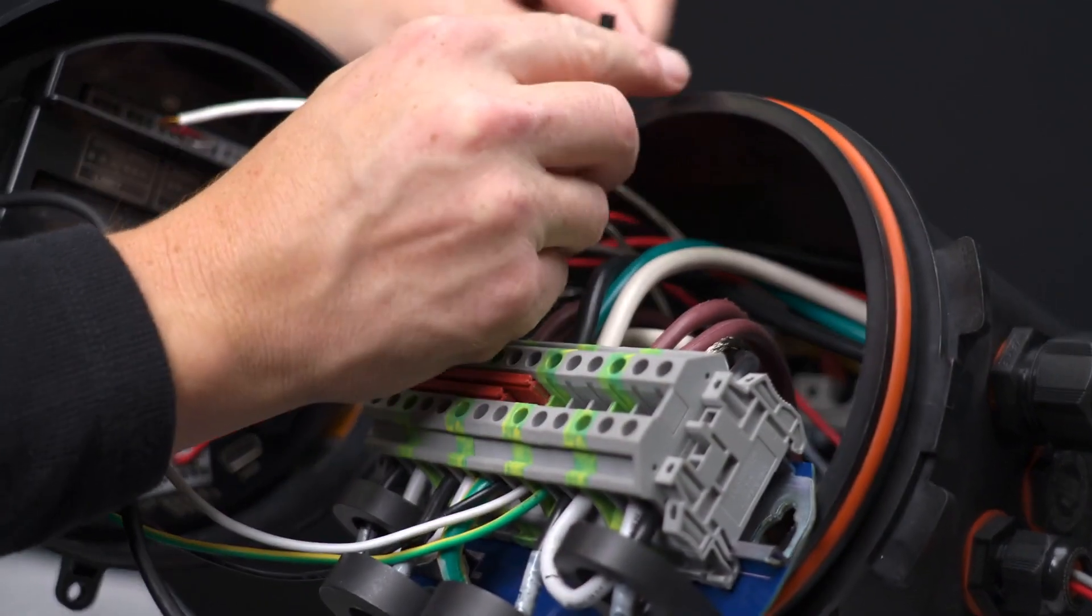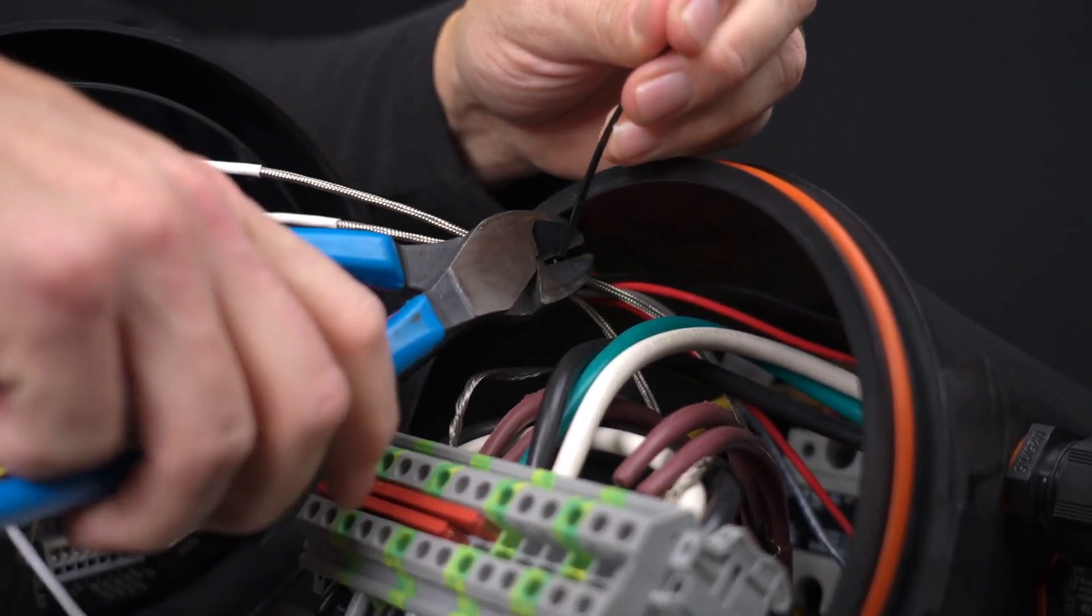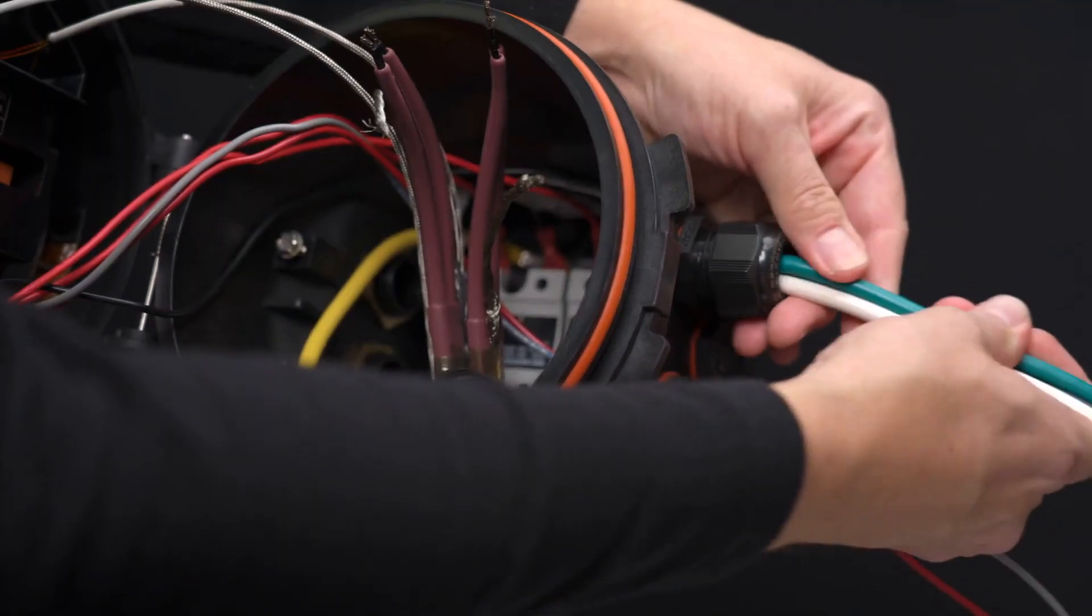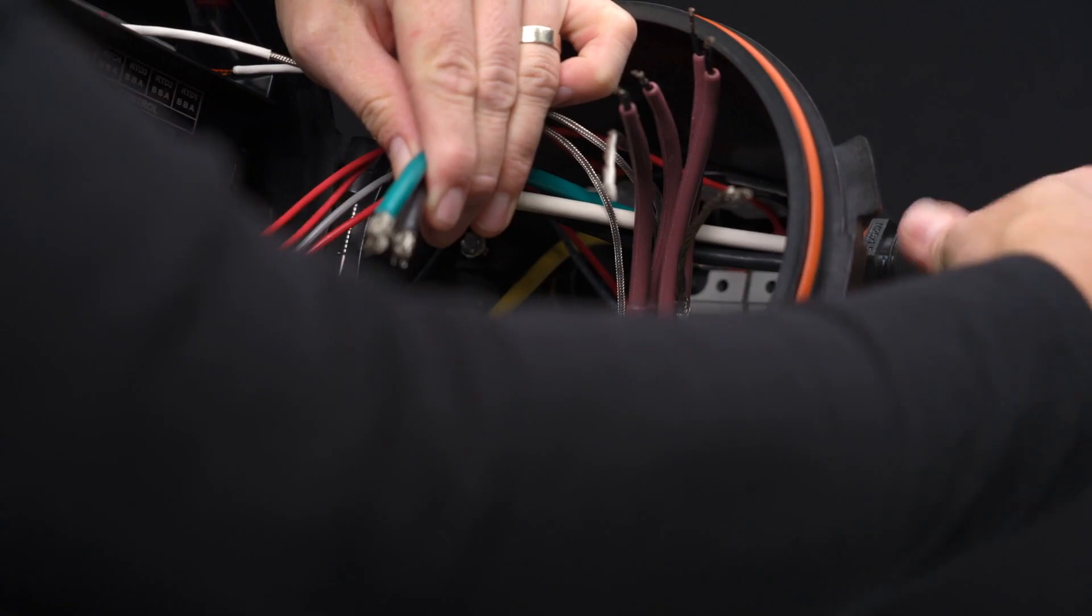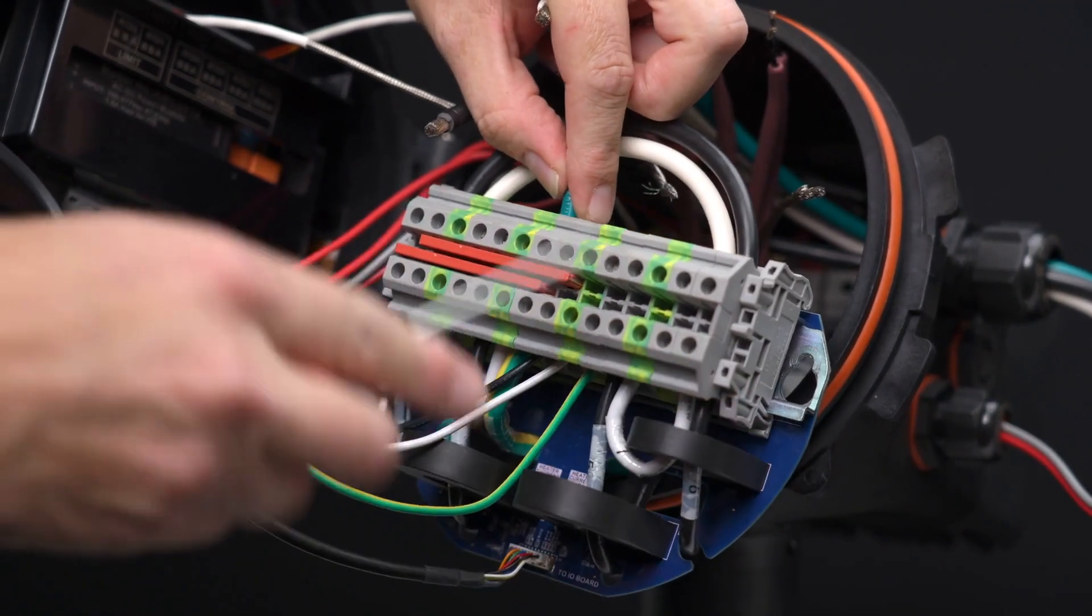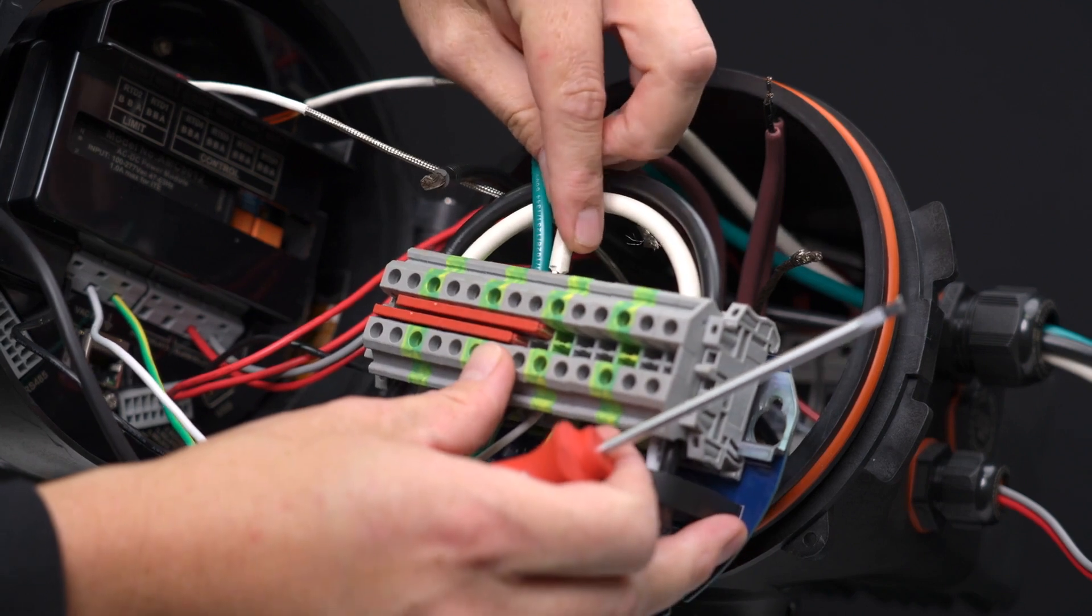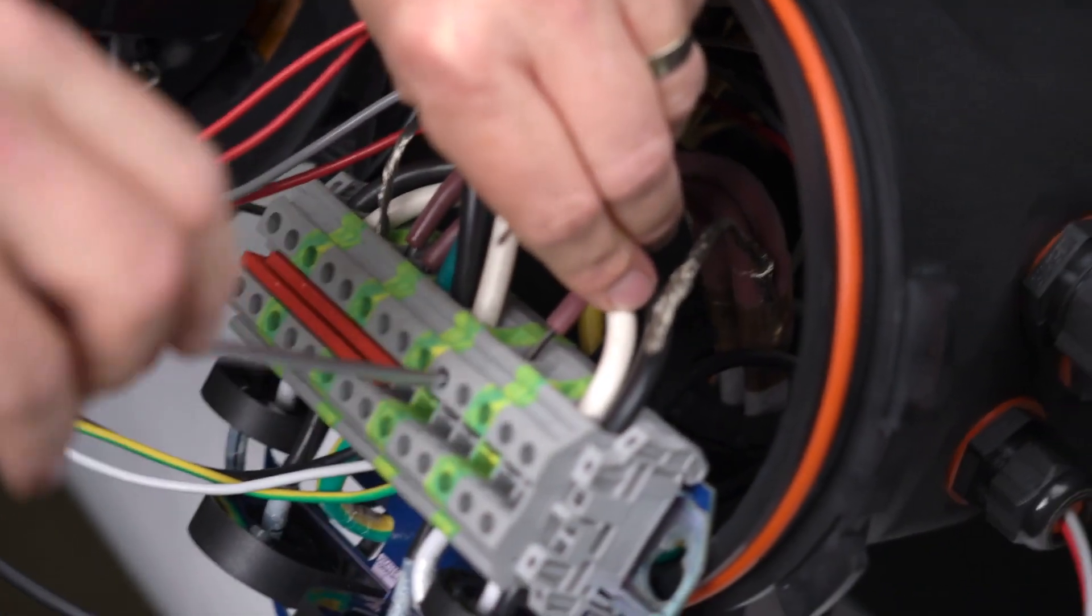Using tie wrap, secure the wires near the DIN rail of the terminal assembly. Route the power wires through the cable gland. Terminate the power wires according to the wiring diagram. Terminate the heater cables according to the wiring diagram.